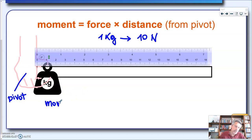So moment, when this is here, is equal to the force, the force is 10 newtons, times the distance. And according to this rule over here, the distance is one centimeter. So 10 times 1 makes 10.